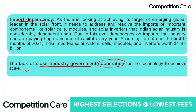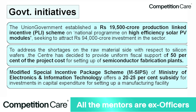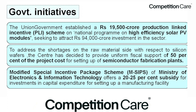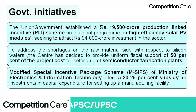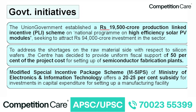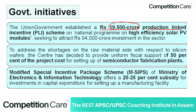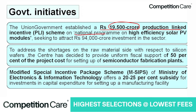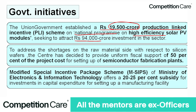The government has taken key initiatives to address all these issues. The Union Government established a ₹19,500 crore Production Linked Incentive scheme under the National Programme on High-Efficiency Solar PV Modules, seeking to attract ₹94,000 crore investment in the sector.